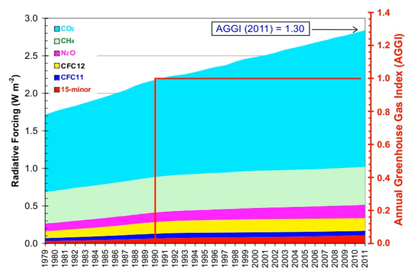The vast majority of anthropogenic carbon dioxide emissions come from combustion of fossil fuels, principally coal, oil, and natural gas, with additional contributions coming from deforestation, changes in land use, soil erosion, and agriculture including livestock.